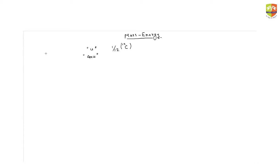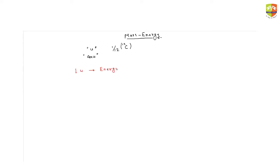If we are measuring mass in terms of units, can we find out how much energy is released if one unit is converted into energy? One unit is roughly equal to 1.67 × 10⁻²⁷ kg. So let's quickly find out how much energy will be released if one unit gets converted into energy.